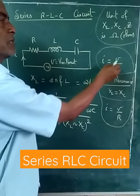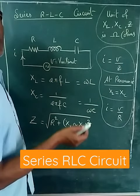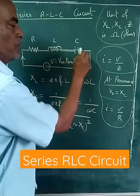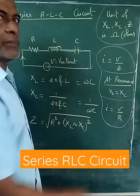The current flowing in the circuit is equal to V/Z. At resonance, the reactive components cancel out, therefore I = V/R.